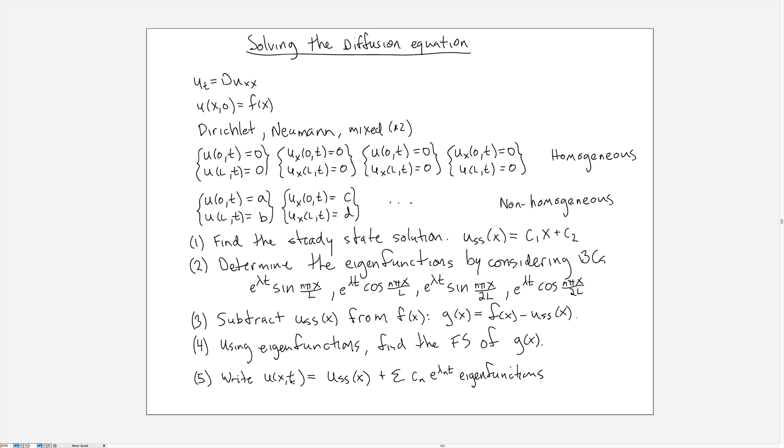And why we do that, because when you plug in t equals zero here you want to make sure that you get a Fourier series that converges to G of X. So then when we add back the steady state this whole expression is equal to f of X, the initial condition.